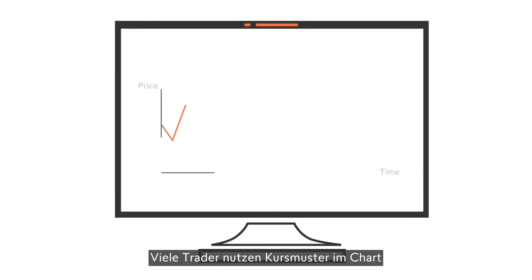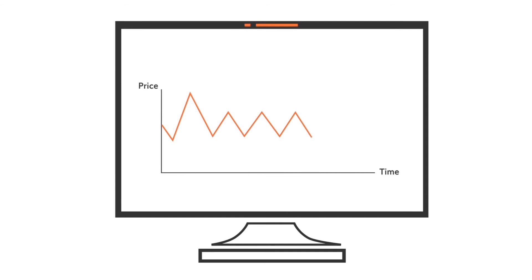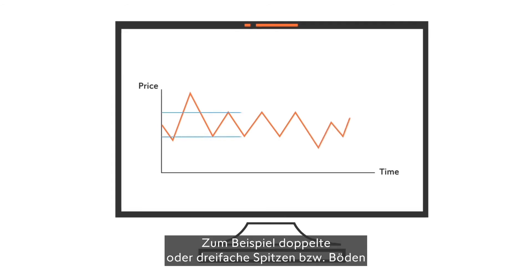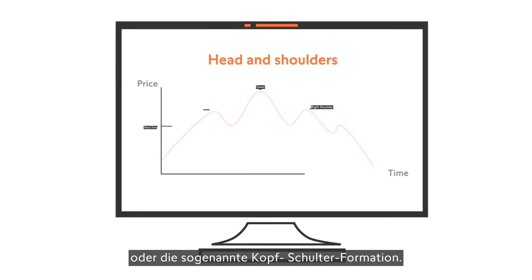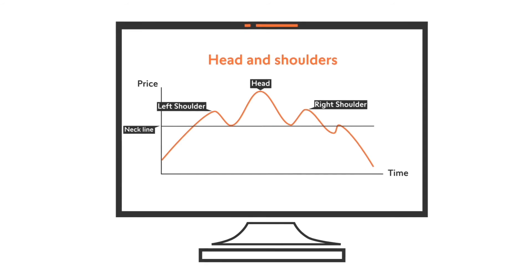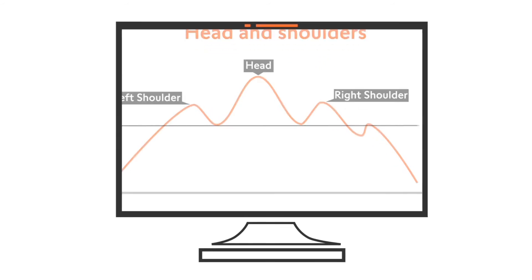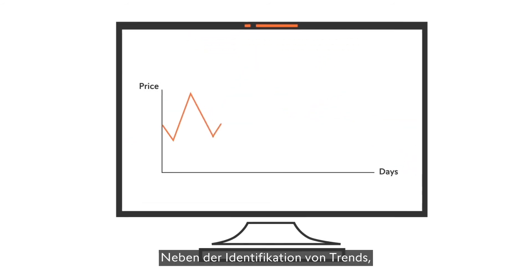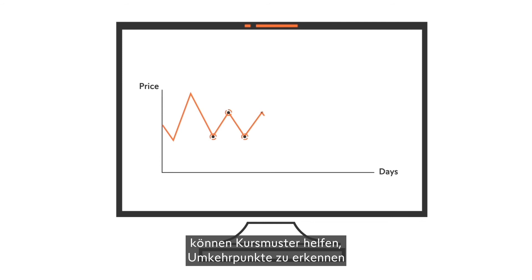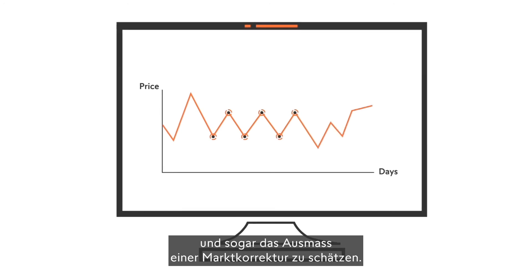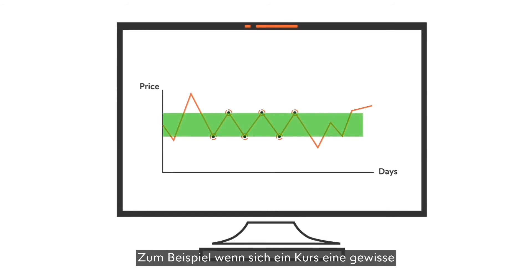Many traders use price patterns that occur in the chart to spot opportunities to trade — for example, double or triple tops or bottoms, or the so-called head and shoulders pattern. In addition to determining a trend, price patterns can help identify reversal points and even estimate the size of a market correction.